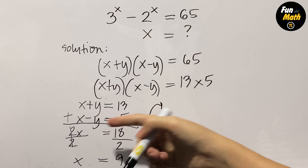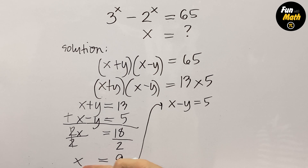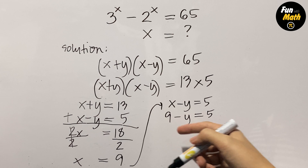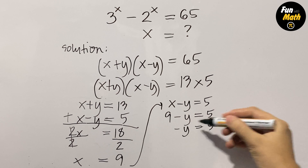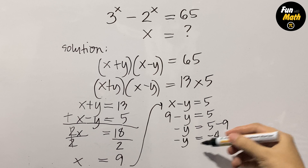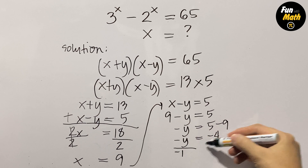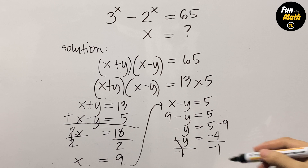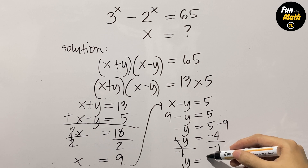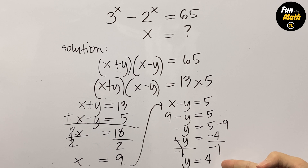Next, using the second equation x minus y equals 5, we substitute the value of x. So that is 9 minus y equals 5. Taking 9 to the other side: negative y equals 5 minus 9, which is negative 4. Dividing both sides by negative 1, we get y is equal to positive 4. So we have the value for y, which is equal to 4.